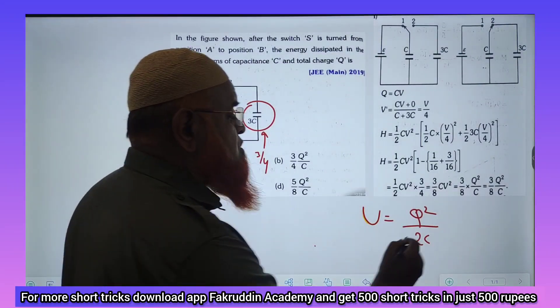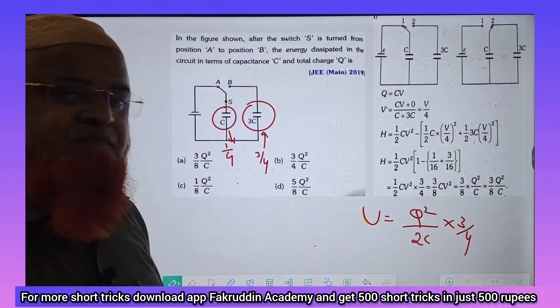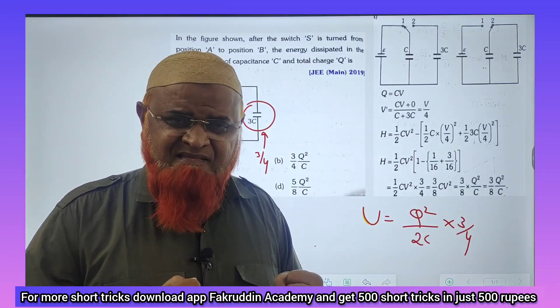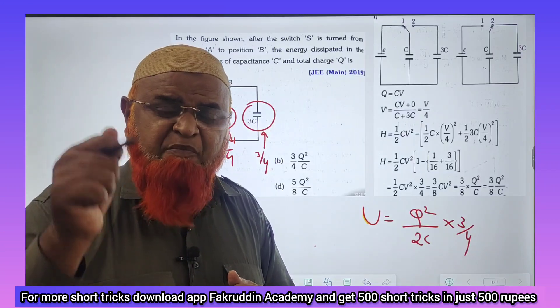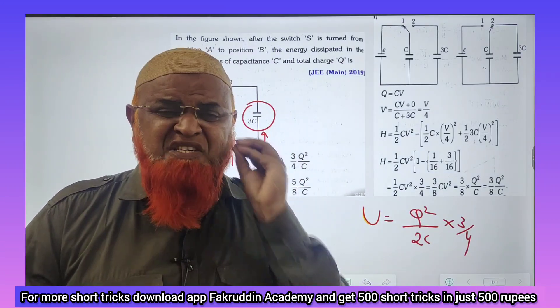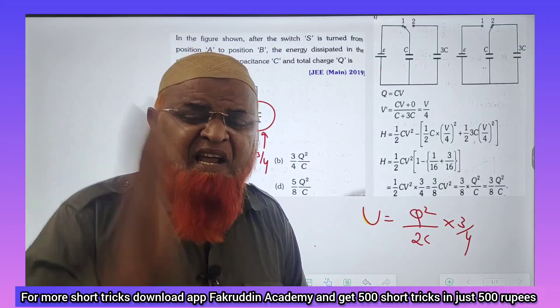The simple thing you have to do is multiply this with 3/4, that's it. Your answer is ready. Is it not amazing? Is it not time-saving? If you want this type of shortcuts, you can just download my app and purchase the course only for just 500 rupees. Your mindset is going to change.